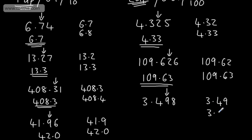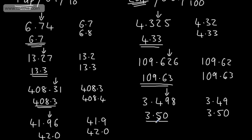If we were to round up, this would round to 3.50. We can see it's going to round up, as 8 is greater than 5 — so we'd say that this is 3.50, correct to two decimal places.